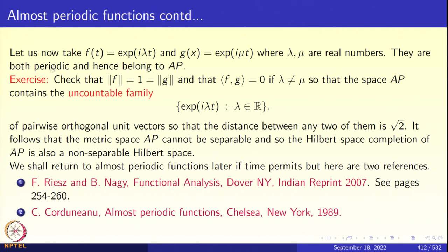Try to calculate the mean value of f times f-bar. You will get 1/(2T) times the integral from minus T to T of e^{iλ(t+x)} times e^{-iλ(t+x)}, which gives simply 1. So the norm of f is 1 and the norm of g is 1. When you calculate the inner product of f and g, you get 0 if λ is not equal to μ. That is a very easy integration.